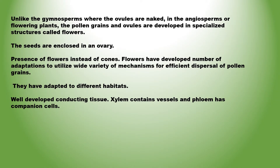Unlike the gymnosperms where the ovules are naked, in the angiosperms or flowering plants, the pollen grains and ovules are developed in specialized structures called flowers. In angiosperms, the seeds are enclosed in fruits. The seeds are enclosed in an ovary, and there is presence of flowers instead of cones. Flowers have developed a number of adaptations to utilize a wide variety of mechanisms for efficient dispersal of pollen grains.